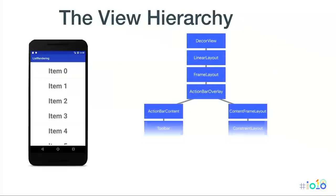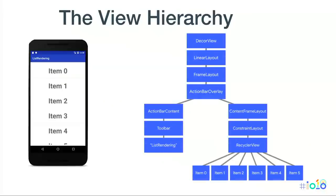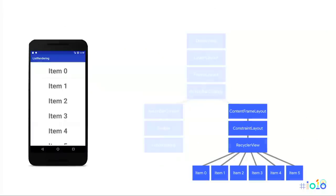The view hierarchy looks exactly like this: you walk down from the DecorView, there's a LinearLayout and FrameLayout — some deep nesting for historical reasons — plus stuff for the action bar. What we're concerned about is the content hierarchy: ContentFrameLayout, then the ConstraintLayout wrapping the RecyclerView, and then all the items on screen — specifically the ones that are actually being measured, laid out, and drawn.